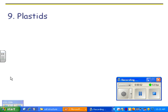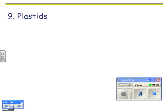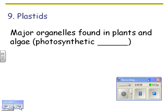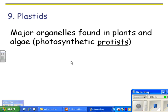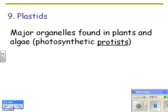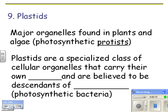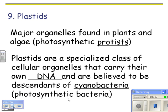Today we're talking about the different organelles in cells, specifically plastids, which are organelles found just in plants and algae, which are photosynthetic protists — almost like primitive plants. Plastids are a specialized class of cellular organelles. Like mitochondria, they carry their own DNA, and they're believed to be descendants of cyanobacteria — blue-green bacteria — which are photosynthetic bacteria.